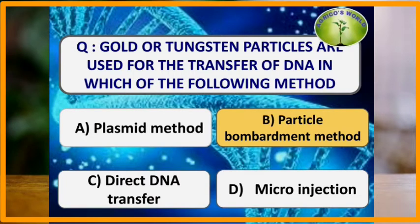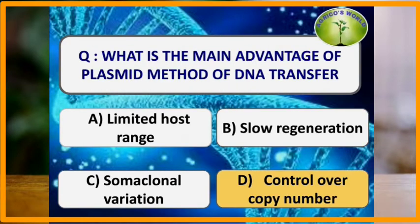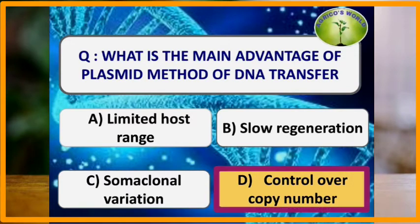Gold or tungsten particles are used for the transfer of DNA in which method? In the particle bombardment method, gold or tungsten particles are used for the transfer of DNA.